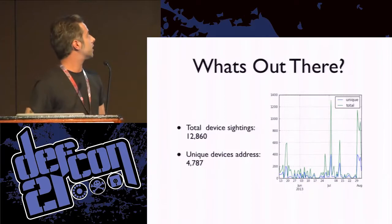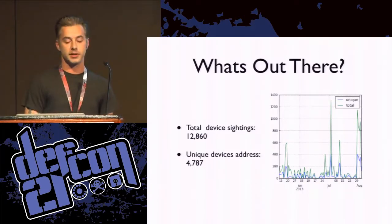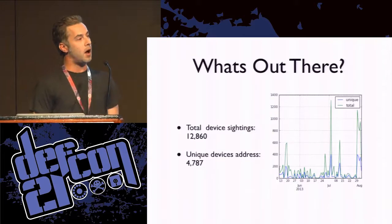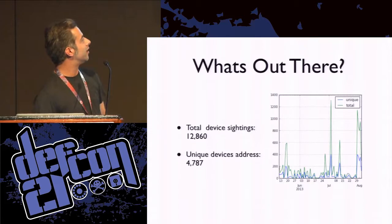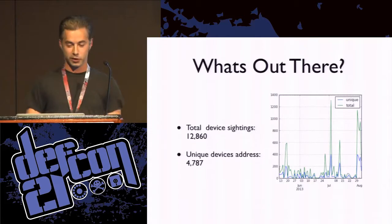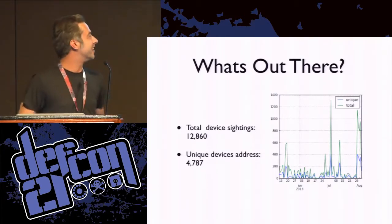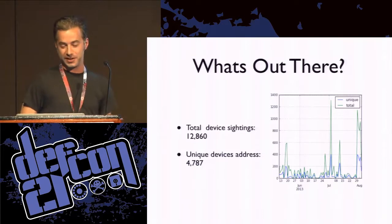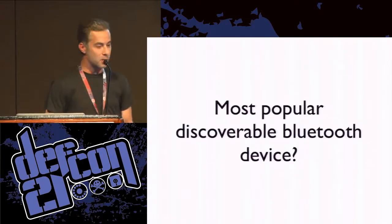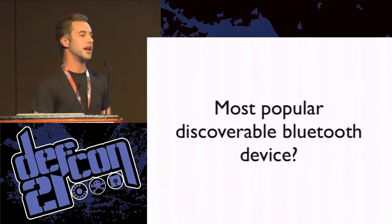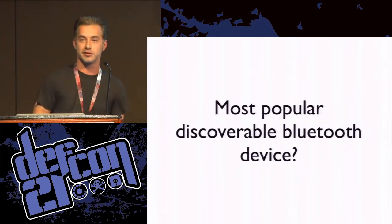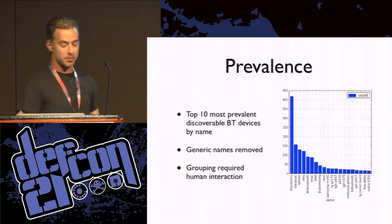The database currently has over 12,000 sightings and around 5,000 actual unique devices. This is just my collection over the last couple of months — Vegas was pretty lucrative, which would be the last couple of days on the end of the time series. One of the first questions I had was: what is the most popular discoverable Bluetooth device out there? As it turns out, it was Blackberries — Blackberries win by a landslide.